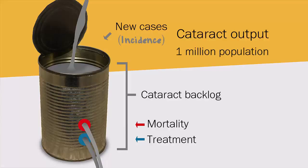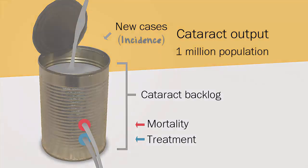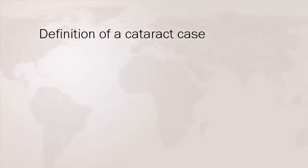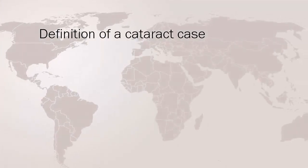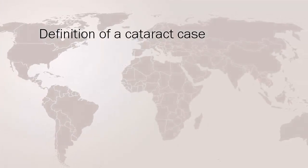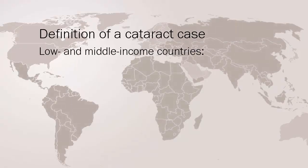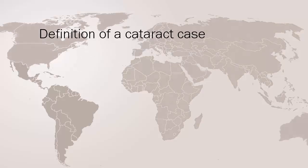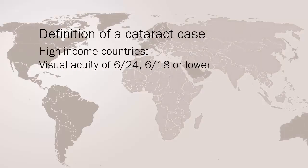To reduce the cataract backlog, the number of cataract operations performed each year must be at least equal to the number of new cases, or incidence of cataract. The definition of a cataract case, also known as an operable cataract, varies in different countries. In many low and middle income countries it is a visual acuity of less than 6/60, while in high income countries it can be a visual acuity of 6/24, 6/18, or sometimes even lower.